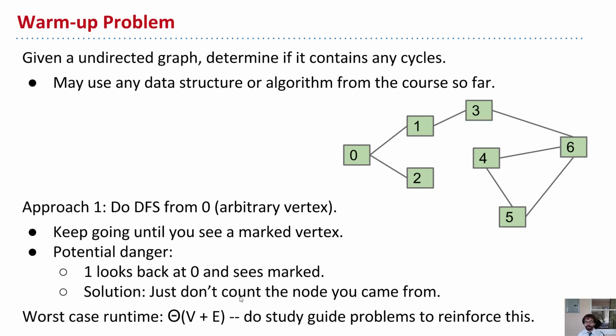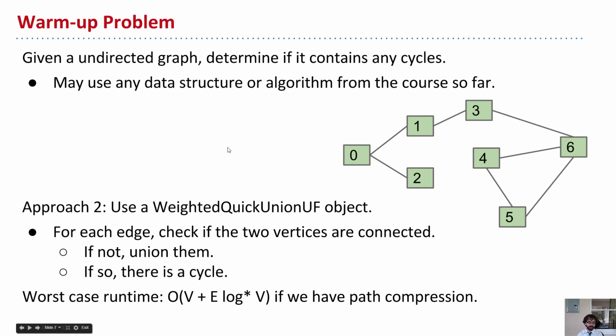OK, so that's one approach. Another approach, which I also like, is a little easier to understand, I think, or a little easier to convince yourself works, that's a little harder to come up with, and that's to use a weighted quick union object. So I won't spoil it yet in case you want to try and come up with it. So the spoiler is that we will use a weighted quick union UF object, or whatever. It doesn't matter. It's just any kind of disjoint set's implementation.